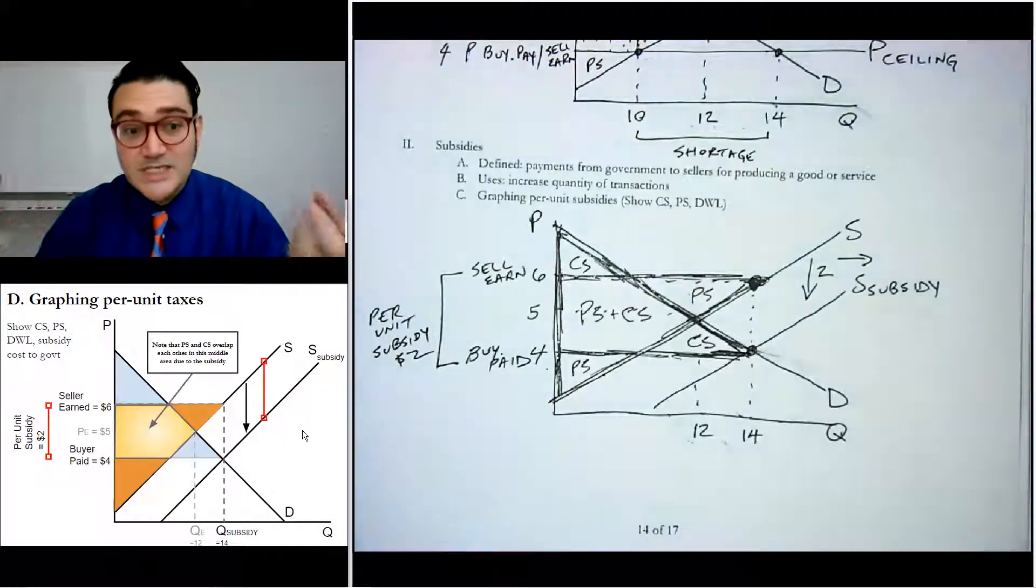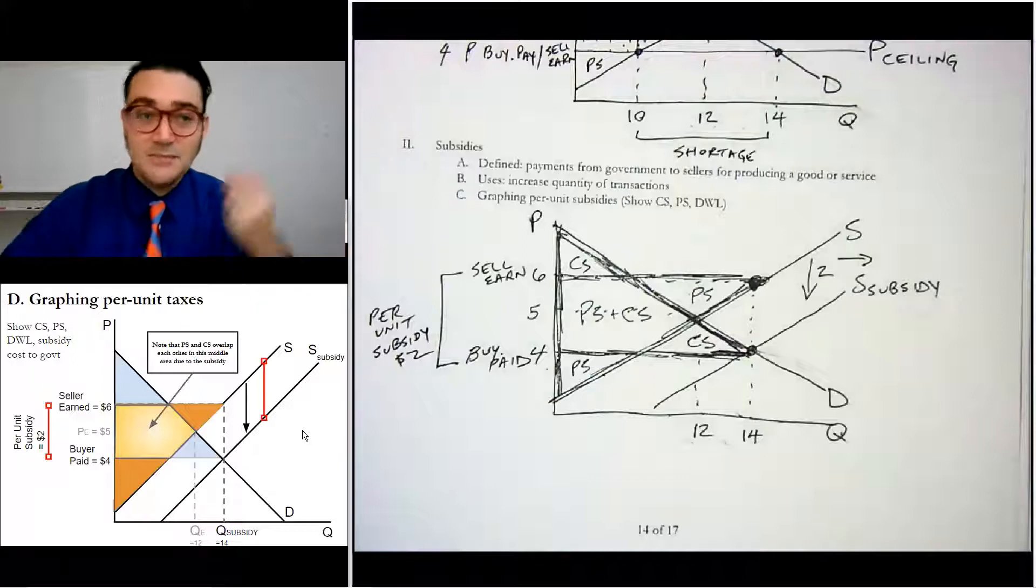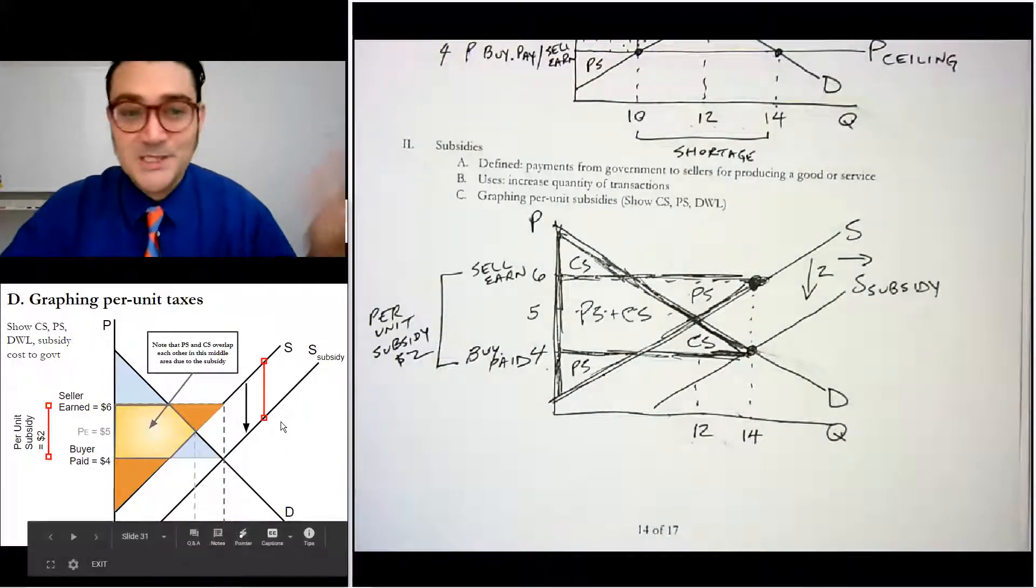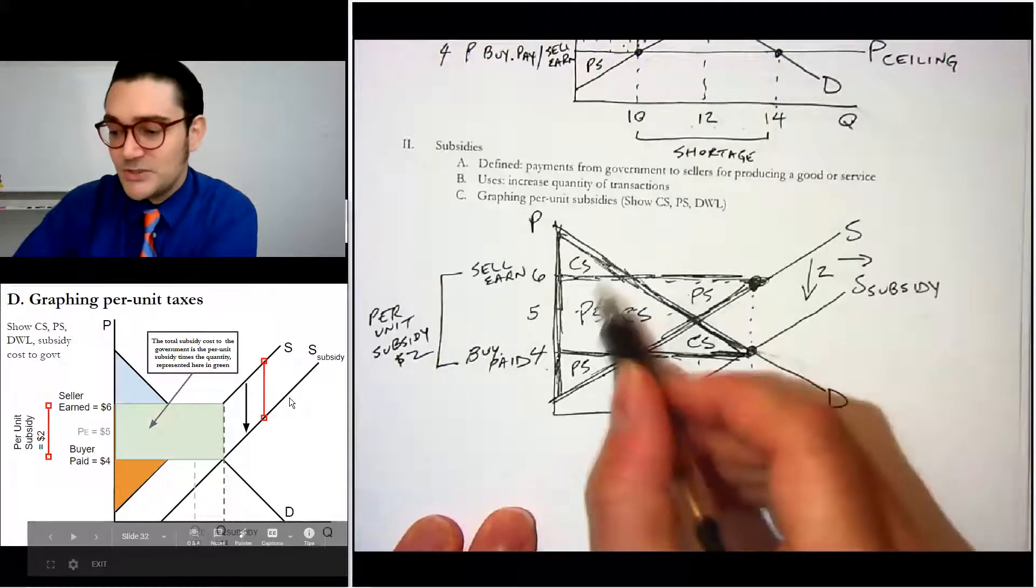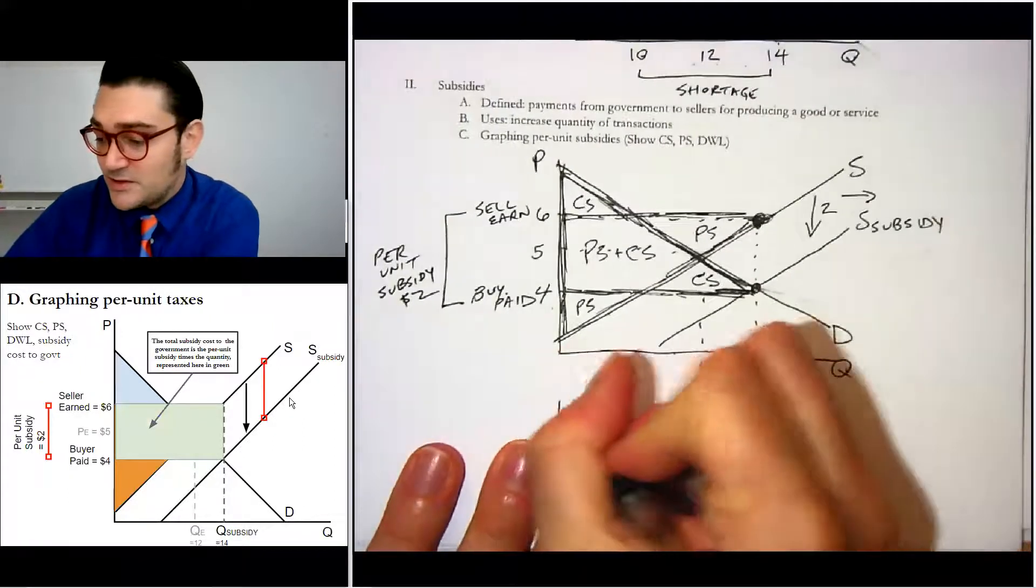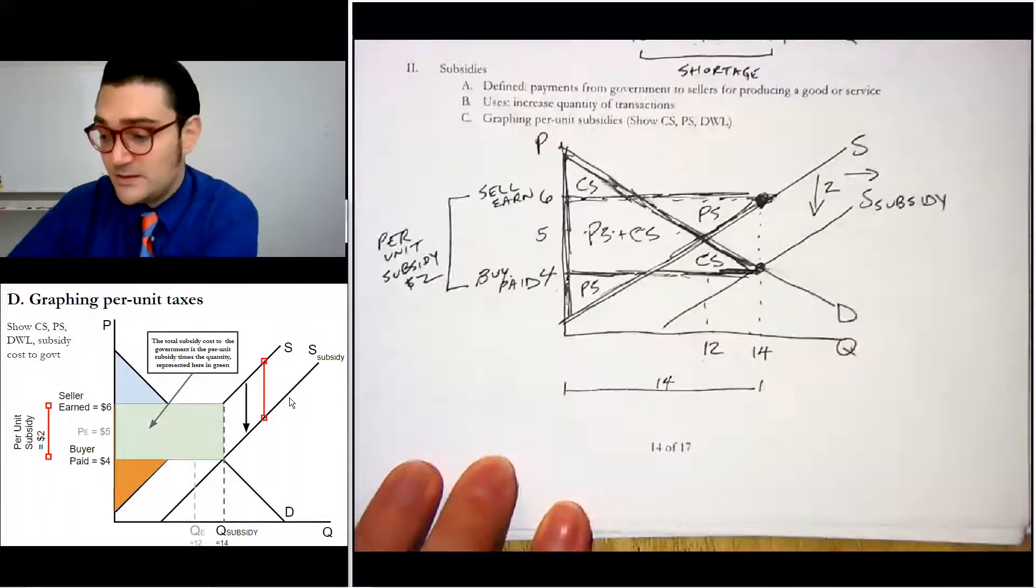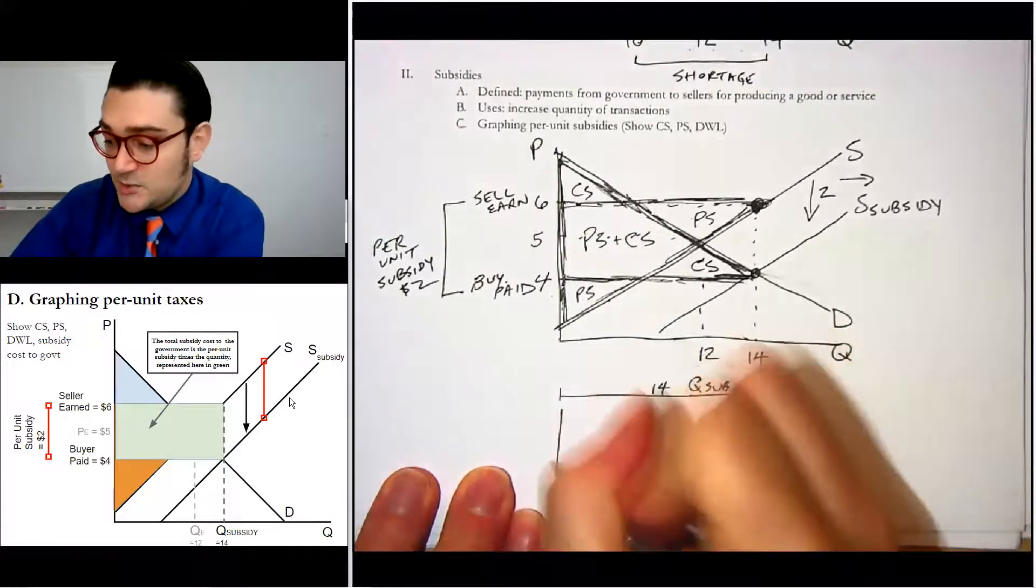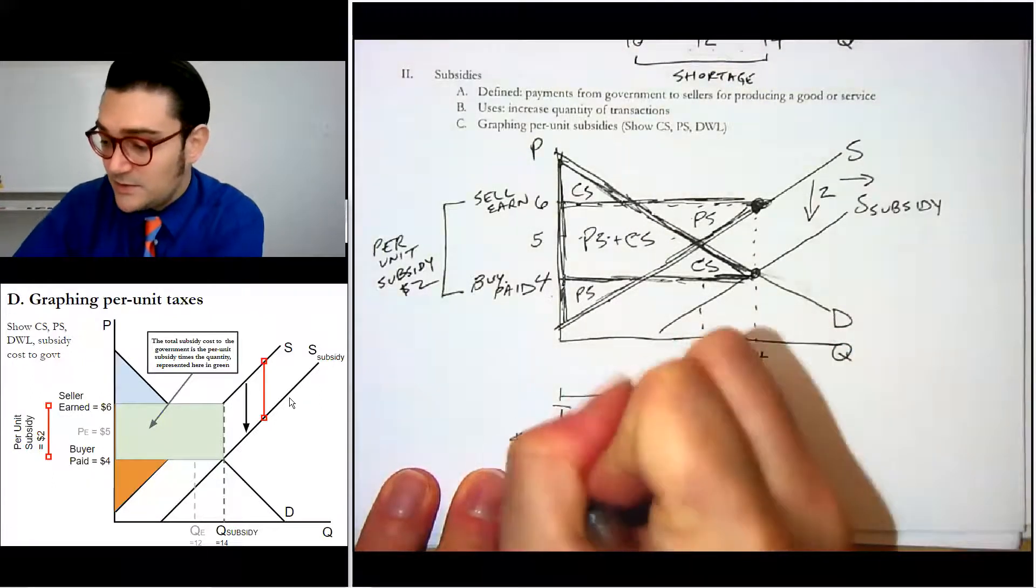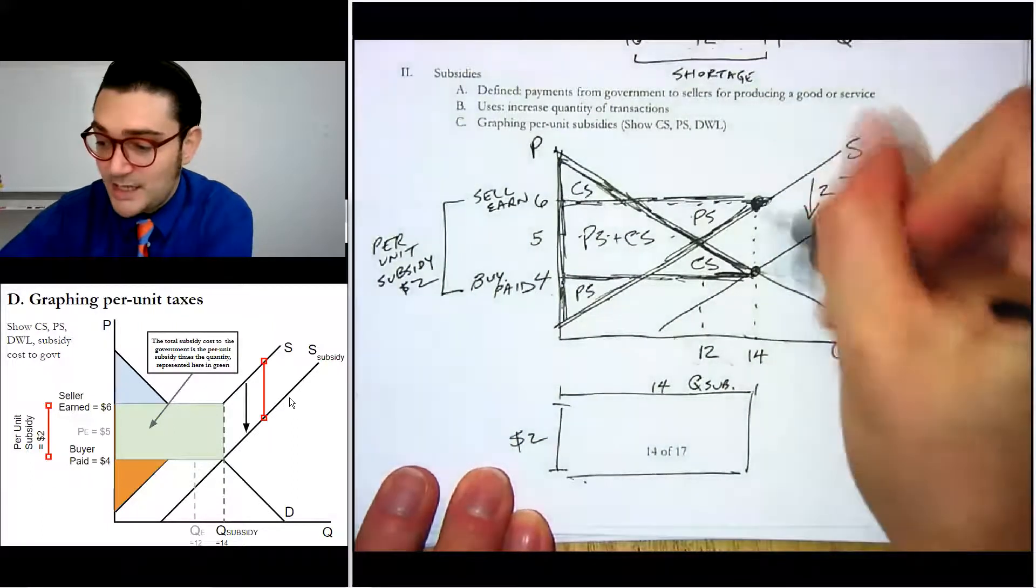And that's, again, it's because of the subsidy. So it's a little weird, but it basically means that both of them are happy because it's a subsidy. It's like government money. Now the subsidy costs of the government, I'm not going to necessarily draw this one on here, but if you know that there's 14 of them, 14 of them being bought, like the quantity under the subsidy times the $2, then the area of that box.